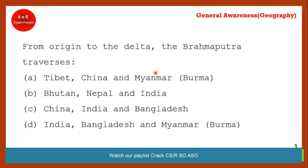Coming to the next question: from origin to the delta, the Brahmaputra traverses which countries? The correct answer is option C — China, India, and Bangladesh. Brahmaputra originates in Tibet, which is in China, then it enters India, then it enters Bangladesh.